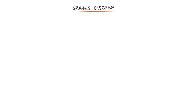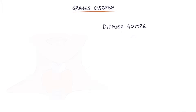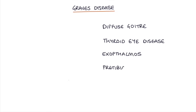There are a couple of features that are unique to Graves disease, and these all relate to the presence of TSH receptor antibodies. These include a diffuse goiter without any nodules, thyroid eye disease — which is the exophthalmos we discussed — and pre-tibial myxedema.